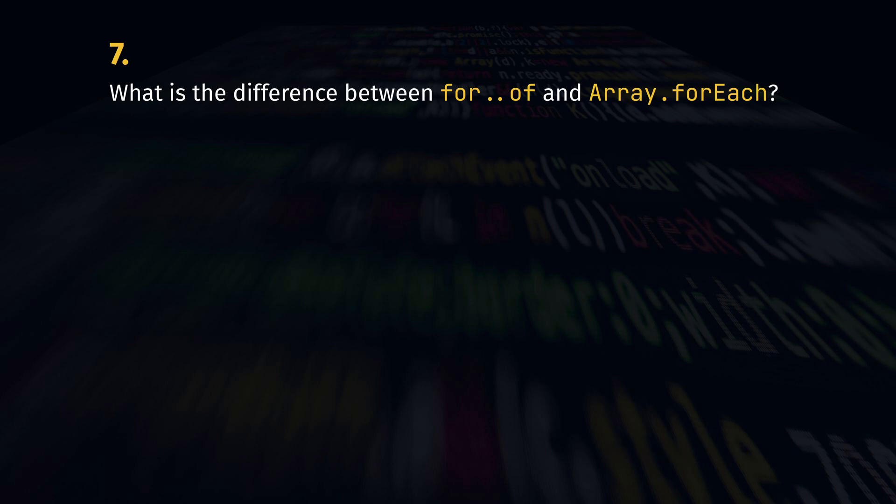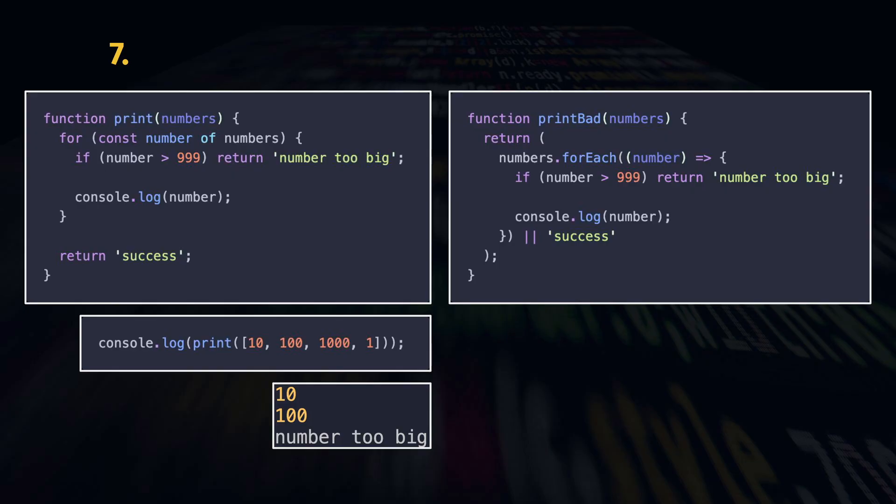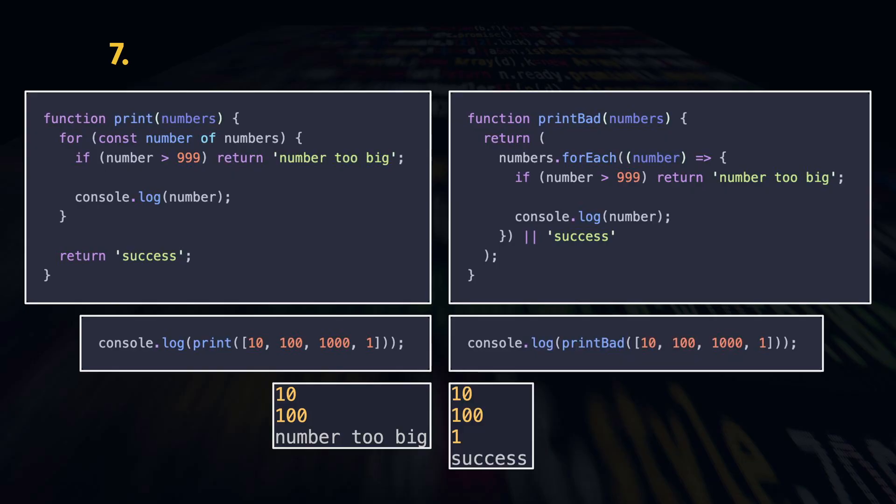This is best illustrated with an example. We want to stop evaluation and return an error message if any number in the array surpasses 1000. Works exactly as expected. What about forEach? The function couldn't care less about our returns in the callback provided to it. It will evaluate each element anyway. This behavior can be confusing.